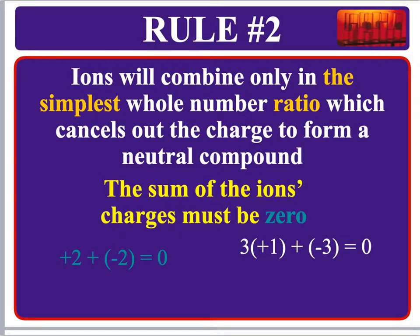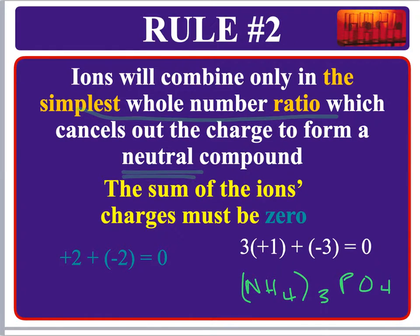When we write these compounds, we want to make sure we get a neutral compound — no overall charge. To achieve this, we need the simplest whole number ratio so we can't reduce the subscripts. For example, two positive charges and two negative charges add up to neutral. Or three 1+ charges and one 3− charge — doing the math — that also produces a neutral compound, like ammonium (1+) times three plus phosphate (3−) equaling zero.